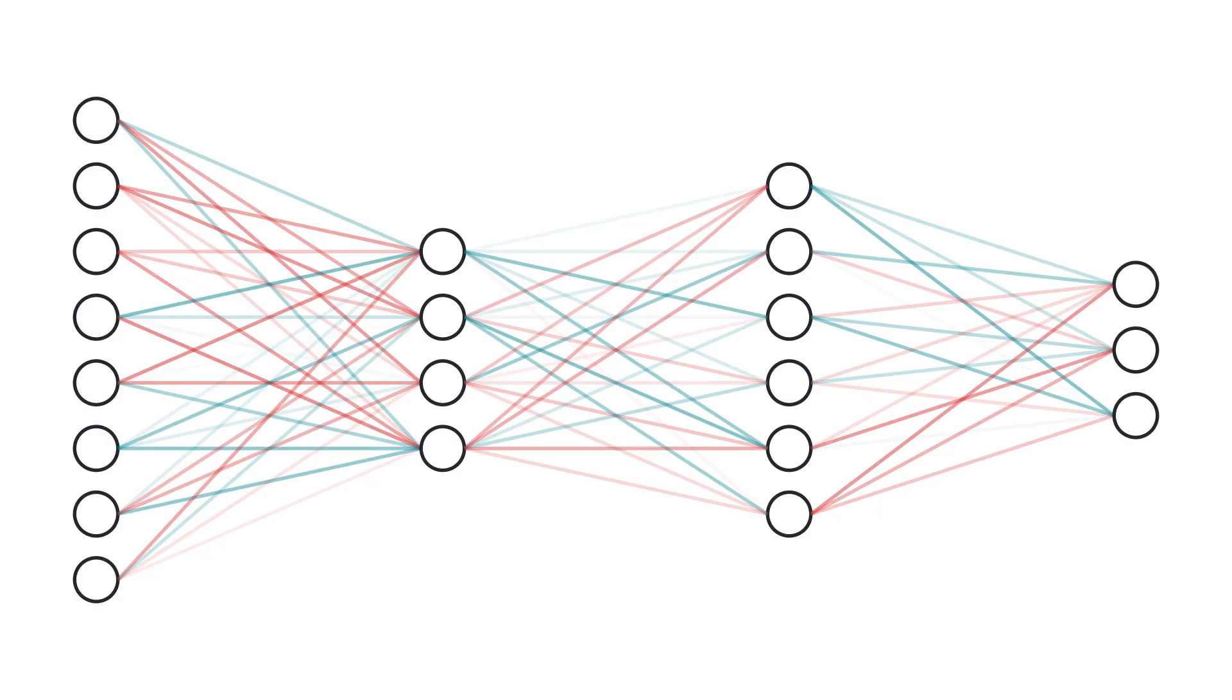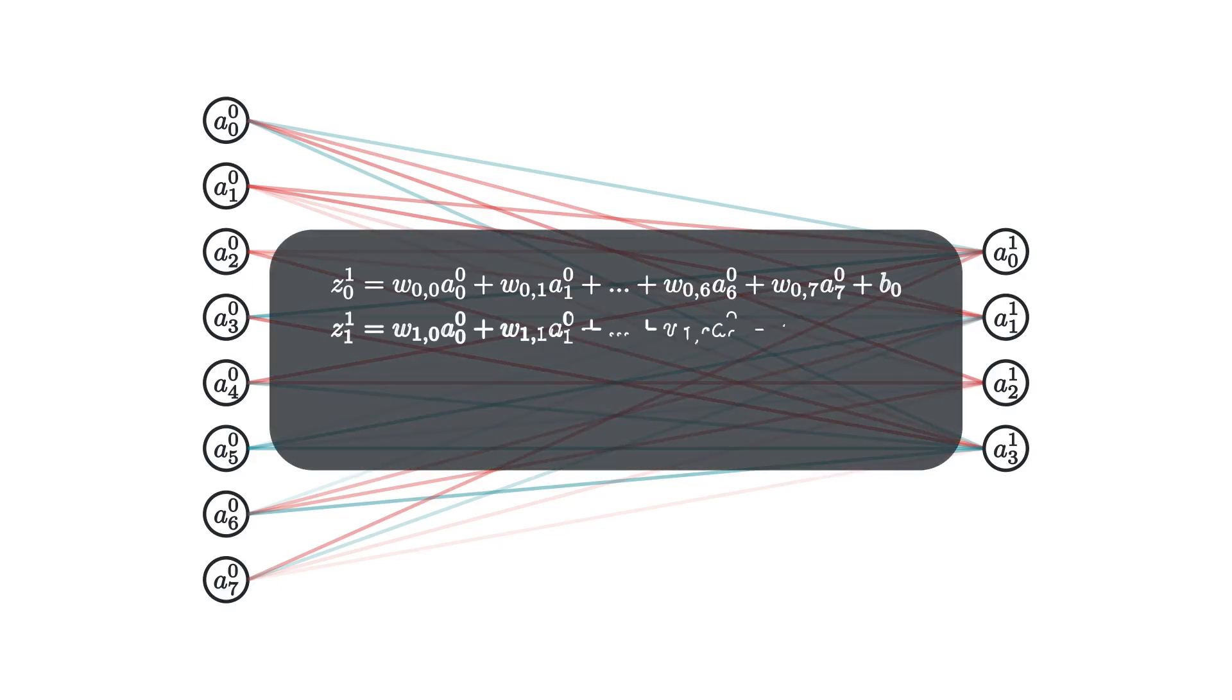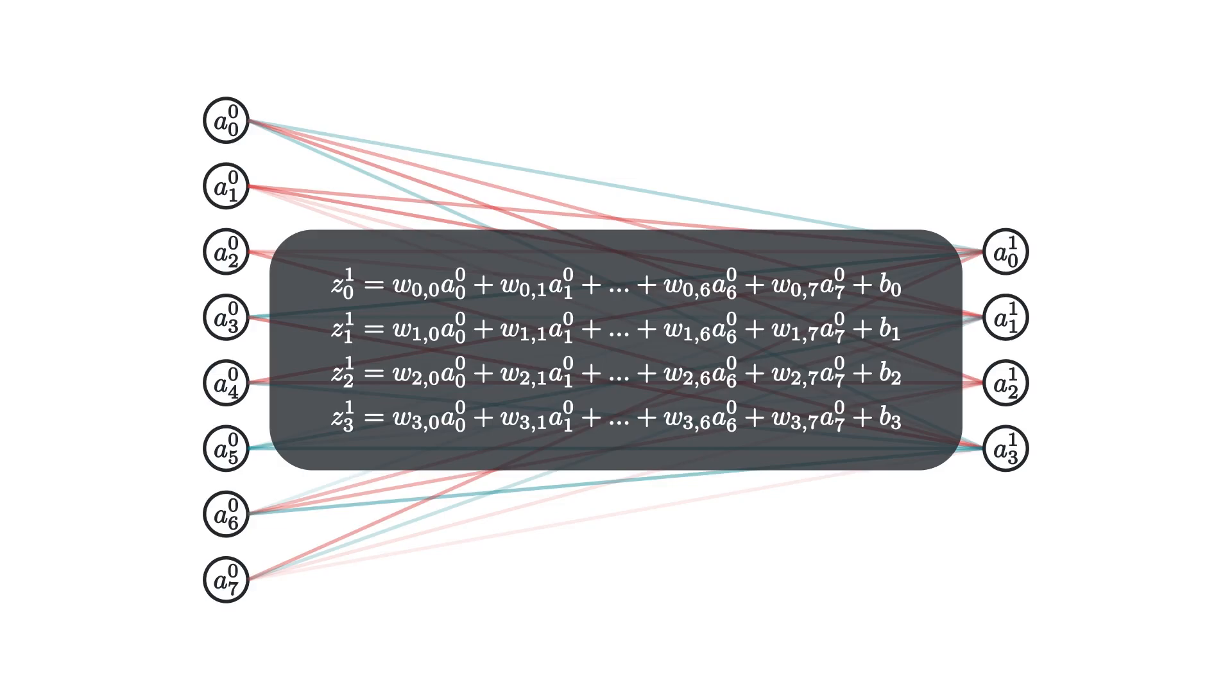I think now is a good time to introduce some notation, and how we can represent these neural networks as affine transformations followed by nonlinear transformations. So, if we represent the outputs of each layer as A, and our weight sums plus the biases as Z, then we get the following set of equations for each layer. You should look at this for a while and see where all the indexing comes from, as I think that's the best way to get it quickly.